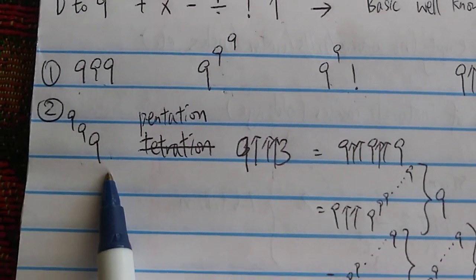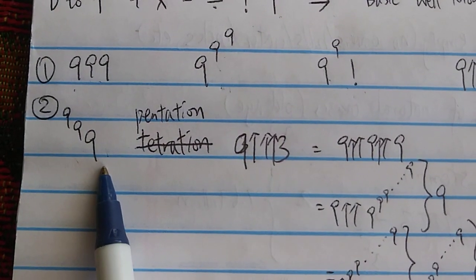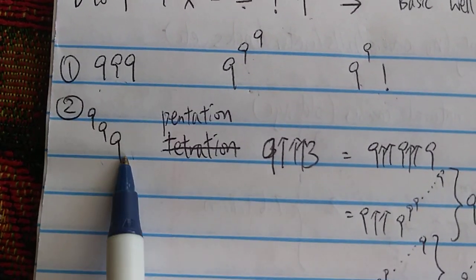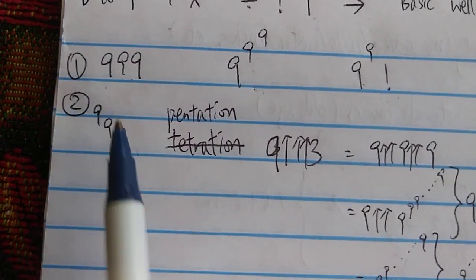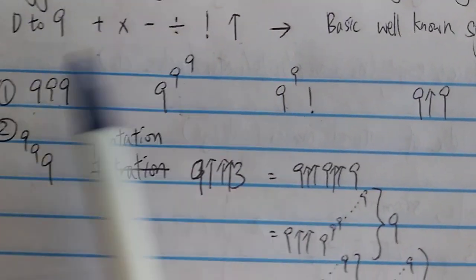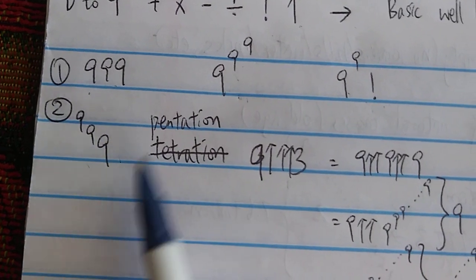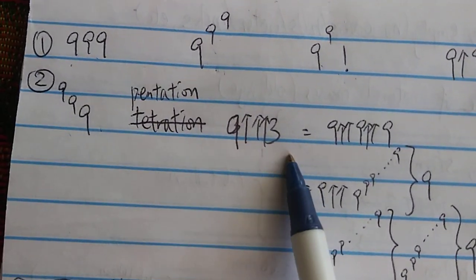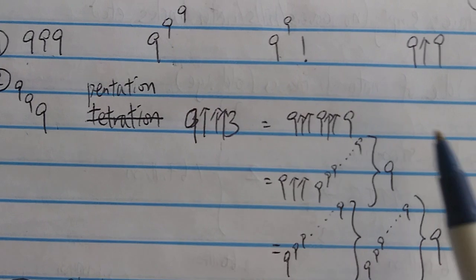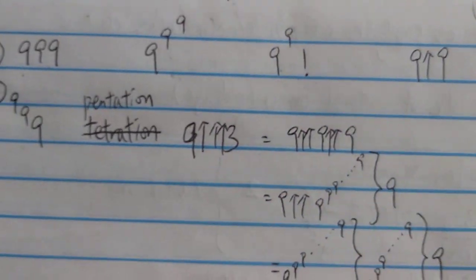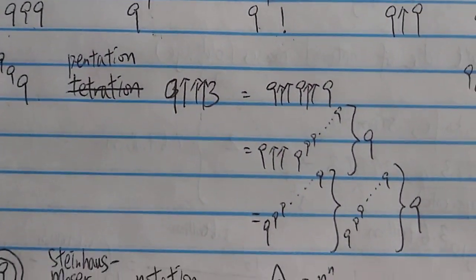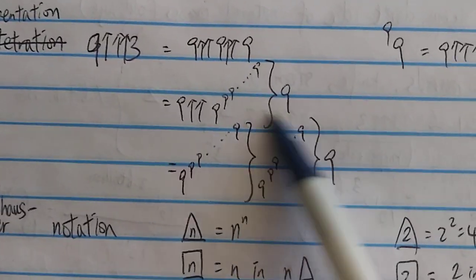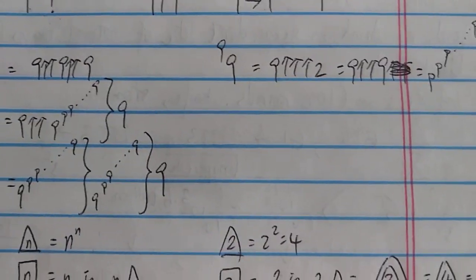So in my second video, some smart commenter brought up 9, 9, 9 stacked to the left instead of to the right. What is this? This is pentation, basically equal to 9 triple-arrow 3, which is pretty big — way bigger than the previous number.